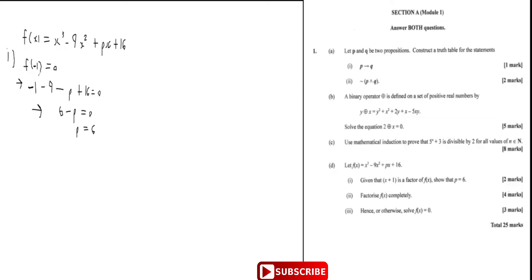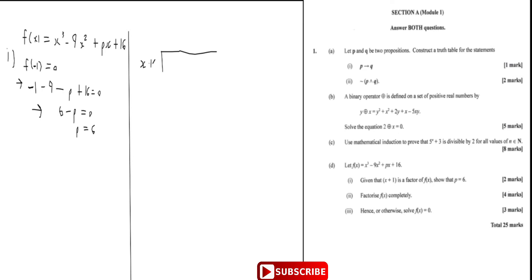Now, to factorize f of x completely, it's best to do polynomial division. So let's go ahead and do our polynomial division. Given that we already know one factor is x plus one, we can divide f of x — which is x cubed minus nine x squared plus six x plus 16 — by x plus one.